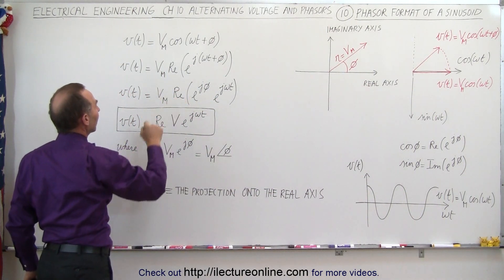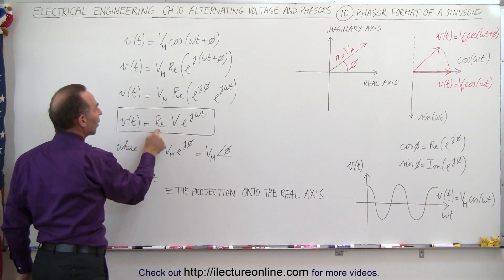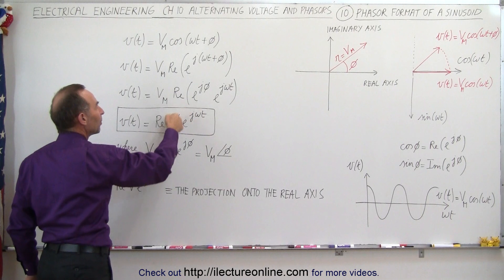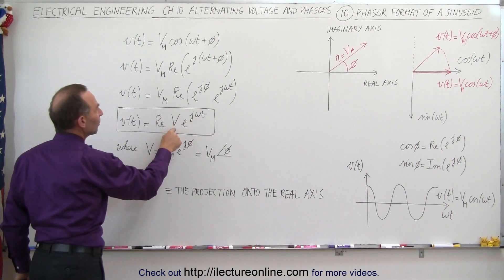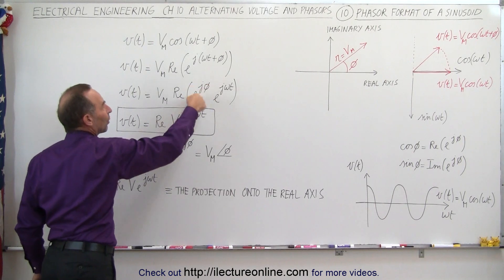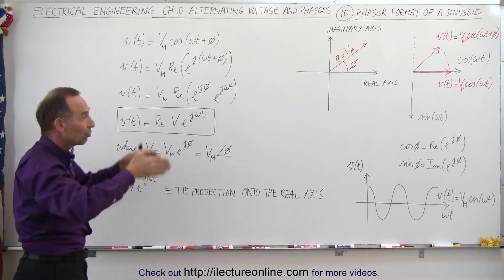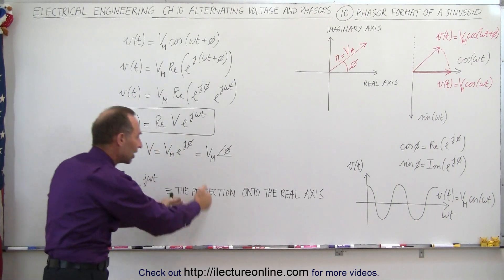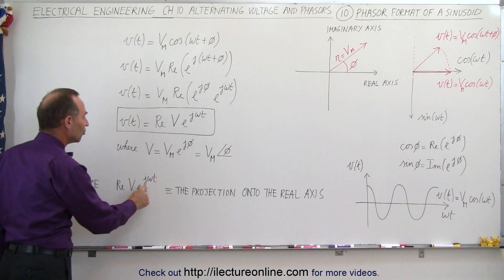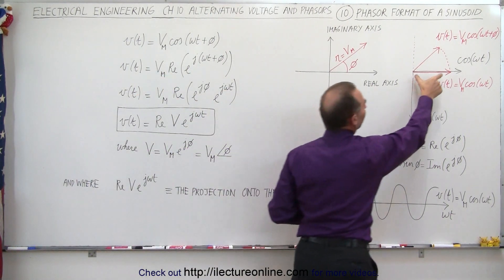Now if we take the real part of that, we can write v of t is equal to the real part of V times e to the j omega t. What does this V represent? This V represents v sub m times the real part of the phase difference portion — the projection onto the real axis. So the real part of V times e to the j omega t simply becomes a projection onto the real axis.